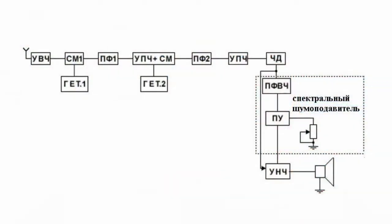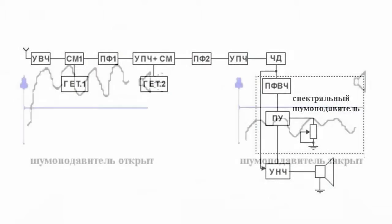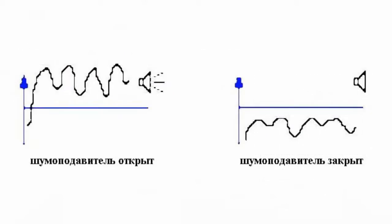The spectral noise gate is a shutdown system of an audio frequencies amplifier. Its job is to listen to broadcast, and if it detects a signal from another radio station, it turns on the speaker.